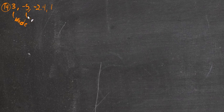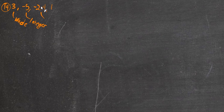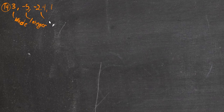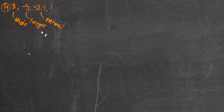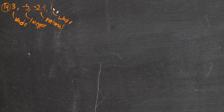Negative 3 is clearly a rational number, but it's also an integer. It's not a whole number because it's negative — no negative number is called a whole number, so we call it an integer. Negative 2.4 is not a whole number and not an integer because it has a decimal part, so it's a rational number — it can be written as one integer divided by another. And positive 1 is a whole number: no decimal and not negative.